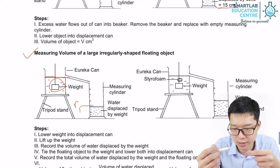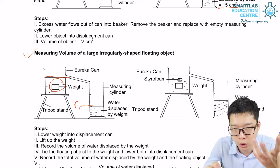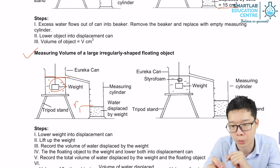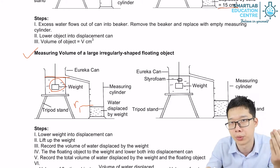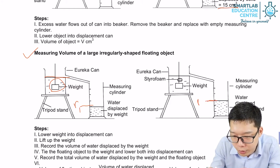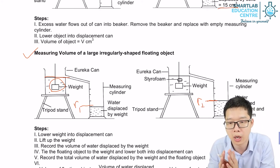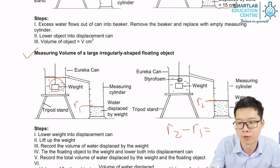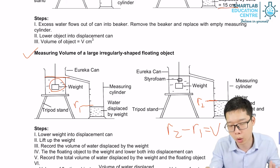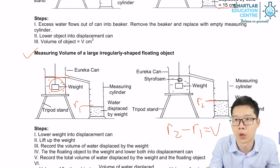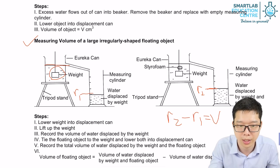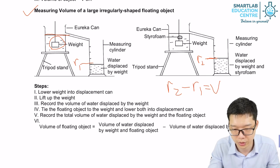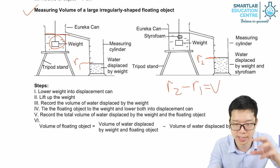We tie on the same string, the styrofoam or wooden block onto the weight and submerge both of them into the water. So that more liquid will flow out. And over here, we have reading two. The difference between R2 and R1 is actually the volume of the floating wooden block or floating styrofoam. So that's the method how we measure irregular shaped object which may be floating. We give them a weight to make sure you can submerge both together.